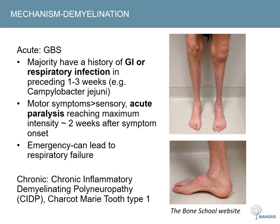The weakness usually starts distally and then progresses and ascends, reaching maximum intensity around two weeks after symptom onset. Patients can also present with sensory symptoms and may have autonomic dysfunction, such as labile blood pressure or heart rate fluctuations. GBS is a medical emergency because in some cases it can lead to respiratory failure if the weakness ascends and affects the muscles involved in respiration.